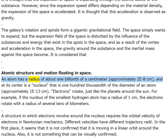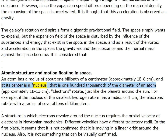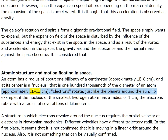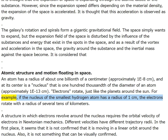An atom has a radius of about one billionth of a centimeter (approximately 1 × 10⁻⁸ cm), and at its center is a nucleus that is one hundred thousandth of the diameter of an atom (approximately 1 × 10⁻¹³ cm). Electrons rotate just like the planets around the sun. For example, if the nucleus of the smallest hydrogen atom has a radius of one centimeter, the electrons rotate at a vast distance.